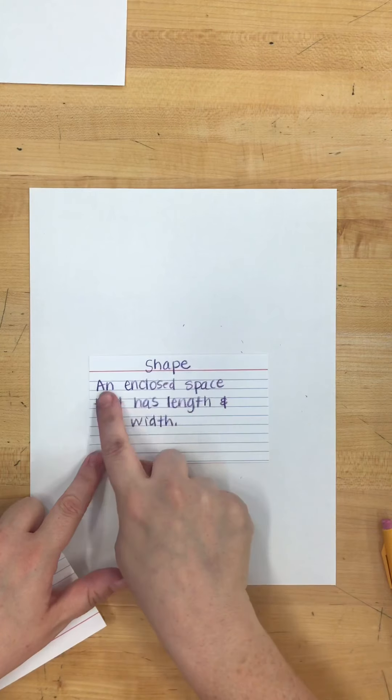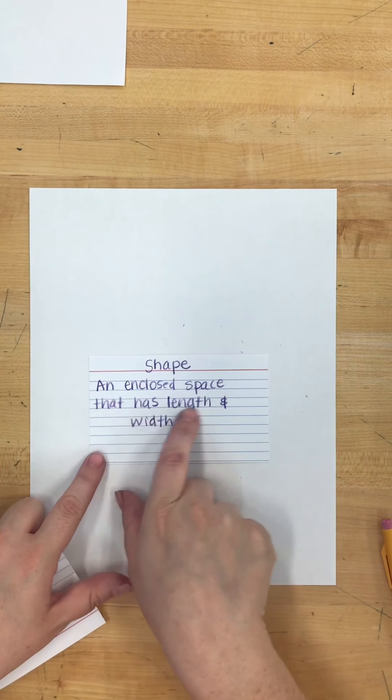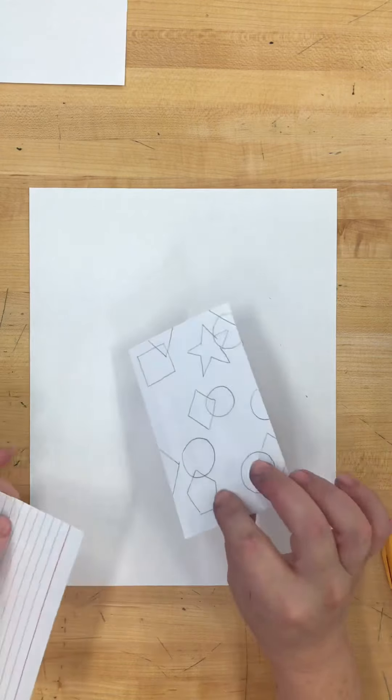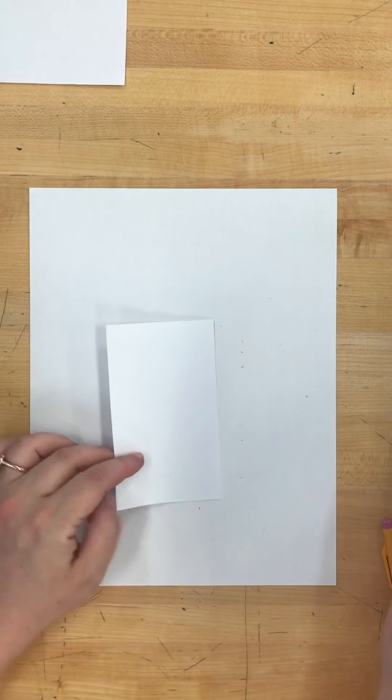So shape on one side, an enclosed space that has length and width, and on the other side of our artist trading card we will start drawing.